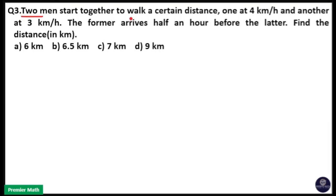Two men start together to walk a certain distance, one at 4 km per hour and another at 3 km per hour. The former arrives half an hour before the latter. Find the distance in kilometers.